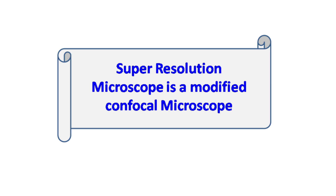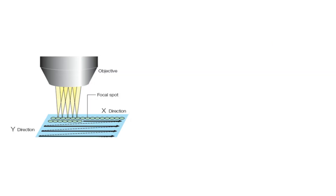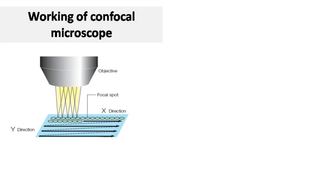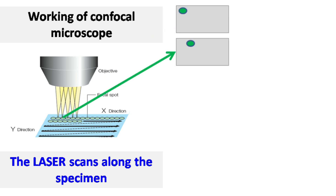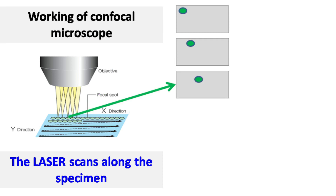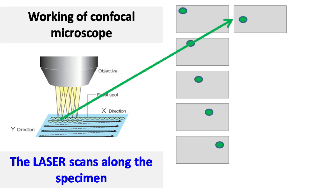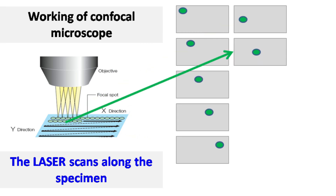First, let's try to understand the function of a confocal microscope. A confocal microscope uses a laser as a source of excitation light. The laser is focused in a small region of the specimen and it scans the specimen in the x and y direction. As the laser scans the specimen, images of each region are taken and combined.